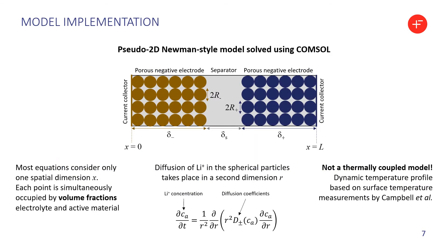The model chosen was the pseudo-2D Newman-style model, implemented using COMSOL. In this model, all equations but one consider only one spatial dimension — the cell thickness X. Each point in X is occupied by fractions of electrolyte, active material, and inactive material. One equation is different: the diffusion equation for lithium ions in the spherical particles, which takes place in a second dimension, the particle radius R. This model is not thermally coupled; instead, a dynamic temperature profile is applied based on surface temperature measurements made by the experimental colleagues.